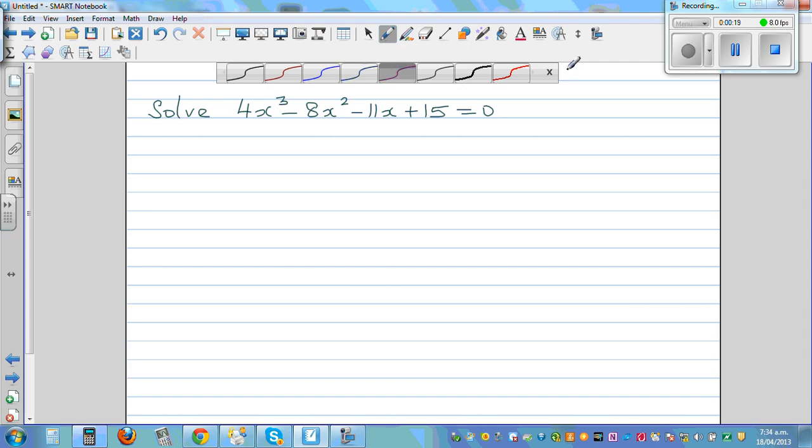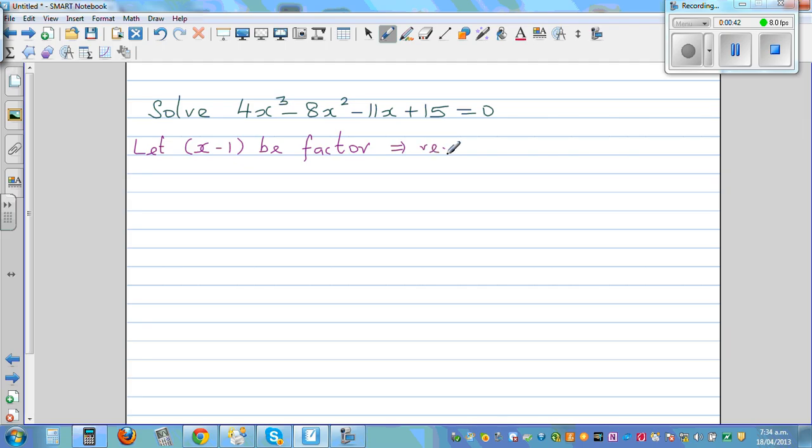We'll have to do a trial and error method. So we're going to let x minus 1 be a factor. This is by letting x minus 1 be a factor, which implies the remainder should be 0 when you're dividing by x minus 1. Now, how do you find the remainder using the synthetic division?